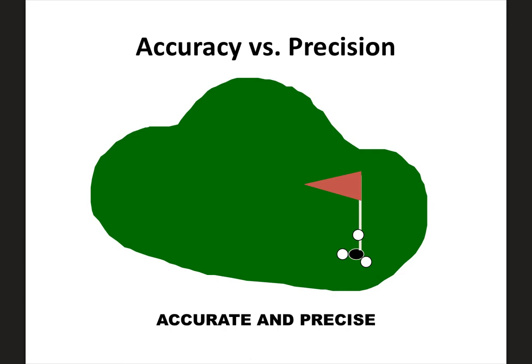You can apply accuracy and precision to any sport. Here's a golfing example: if you hit the ball from afar and got all three shots in a tight cluster near the hole, that would be pretty accurate and definitely precise since all three are close to each other. In another golf example, they're not as close to the hole — so less accurate — but they are precise because they're very close to each other.